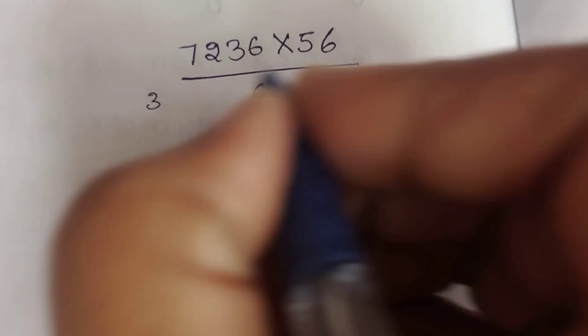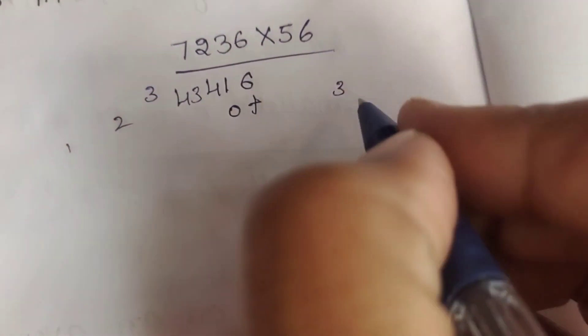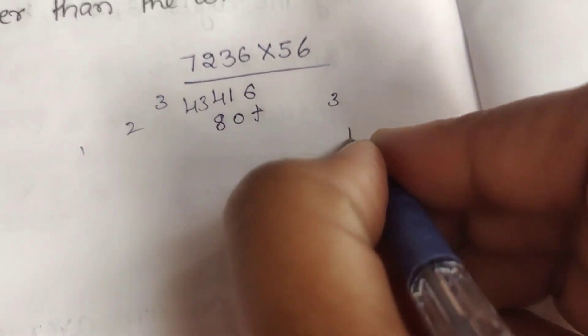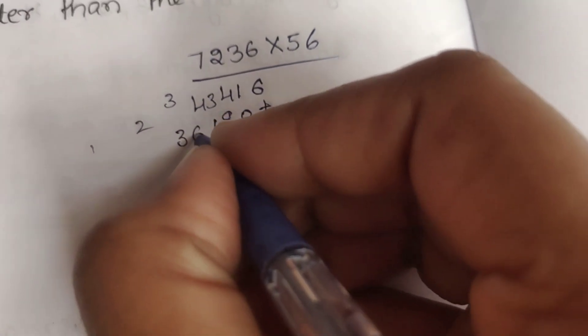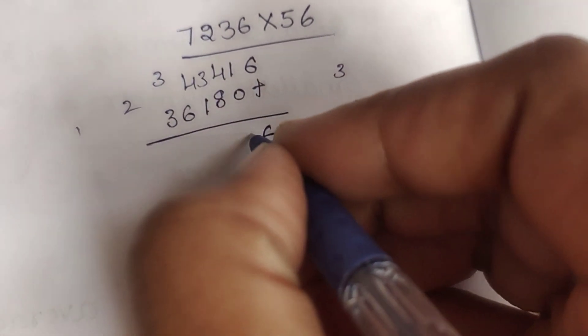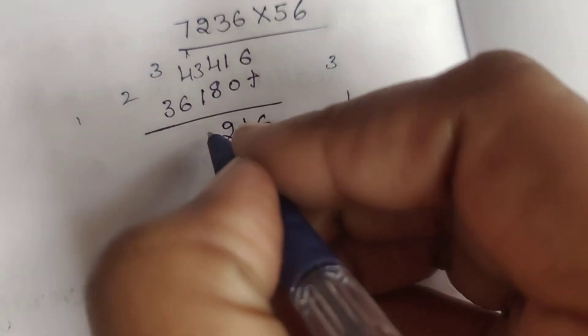Next we will multiply by 56. 6×6 are 36, so 3 carry. 6×3 is 18 plus 3 is 21, so 2 carry. 6×2 are 12, 12 plus 2 is 14, so 1 carry. 7×6 are 42 plus 1 is 43. 5×6 are 30, so 0, 3 carry. 5×3 is 15 plus 3 is 18, so 1 carry. 5×2 are 10 plus 1 is 11, so 1 carry. 7×5 are 35 plus 1 is 36. Then adding: 6, 1 plus 0 is 1, 8 plus 4 is 12, so 1 carry, 1 plus 3 is 4, 4 plus 1 is 5, then 4 plus 6 is 10, so 1 carry, 3 plus 1 is 4. So 4 lakh 5,216.